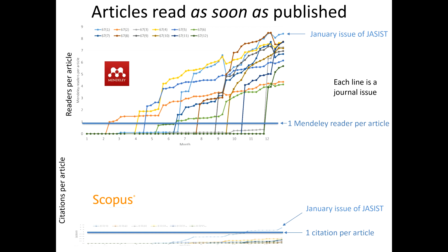Here's an example using the Journal of the Association for Information Science and Technology. Each line in the top graph reflects the average number of Mendeley readers of articles from a single issue. The lines jump from zero when the issue is first published. As soon as an issue is published, there's an average of over one reader per article — so at the month of publication, all articles in the issue can expect to have at least one Mendeley reader. This gives a basis to start evaluating impact immediately.